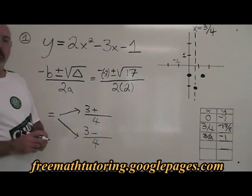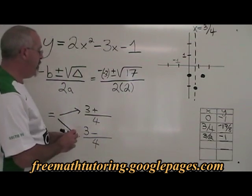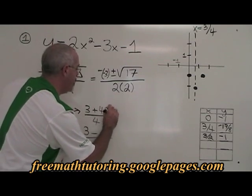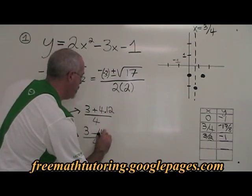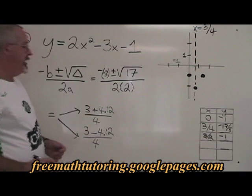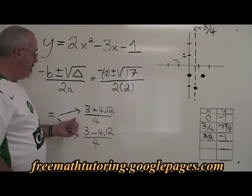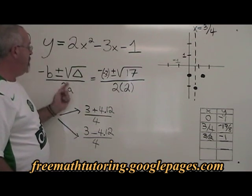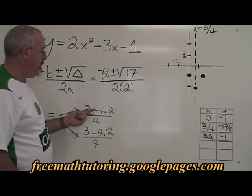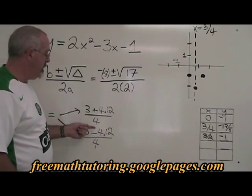And the square root of 17 is 4.12. At this point, we have split our formula in two. The plus or minus makes us solve it if we have a plus and solve it if we have a minus.